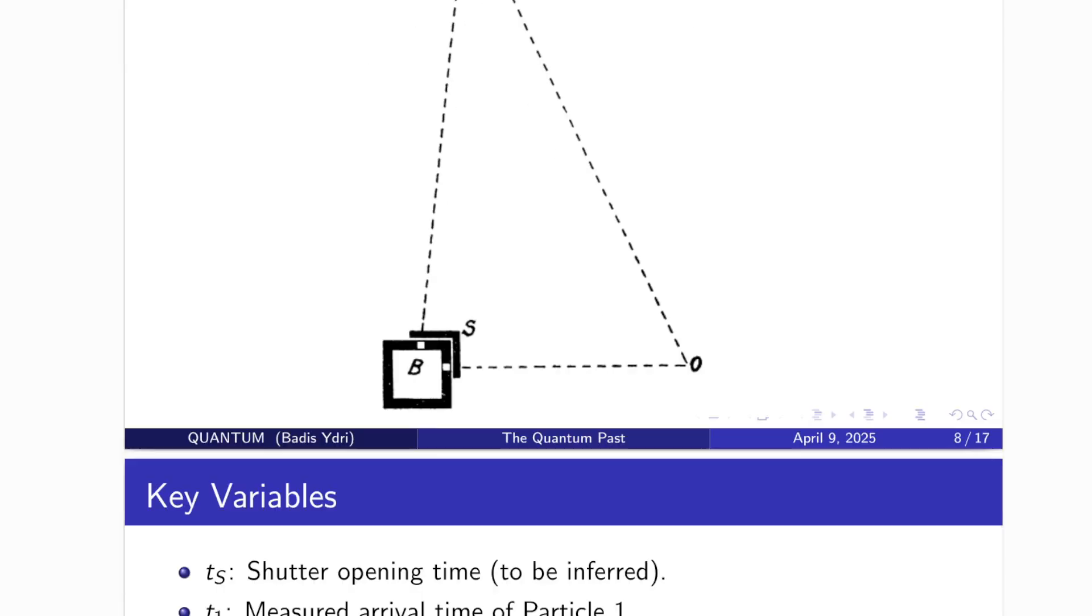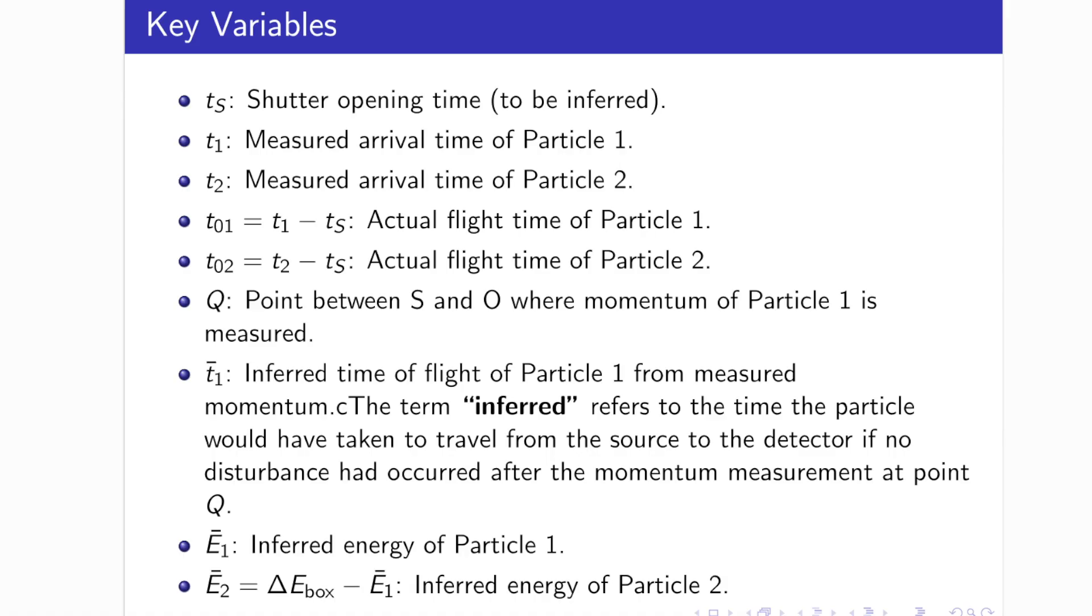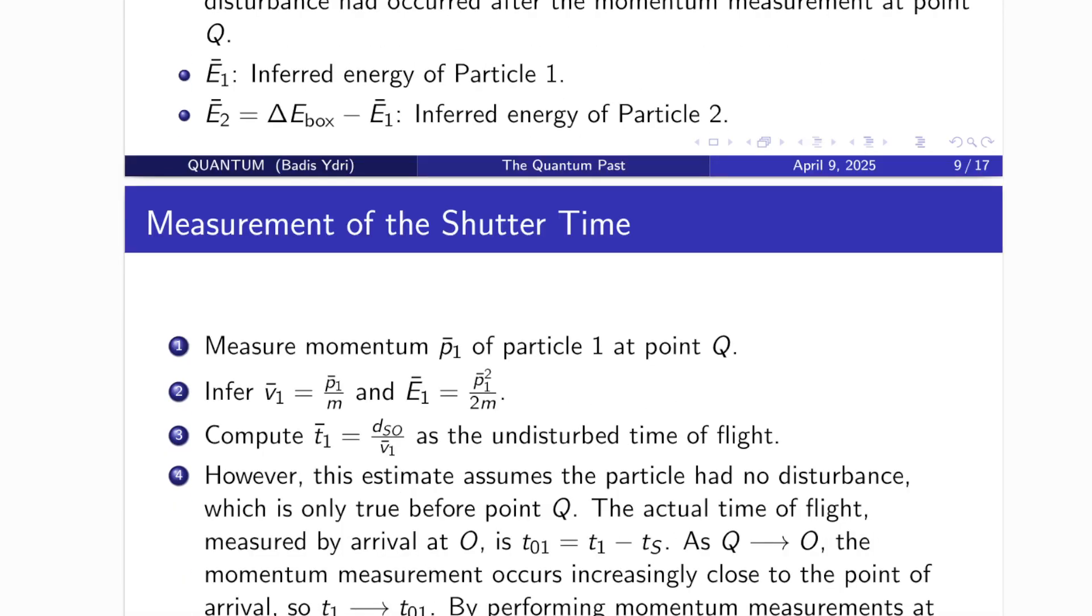Part 2, Key Variables. Here are the key variables used in the experiment. T sub S is the time the shutter opens. It's unknown and must be inferred. T1 is the measured arrival time of the first particle. T2 is the measured arrival time of the second particle. The actual time of flight for the first particle is T1 minus T sub S. The actual time of flight for the second particle is T2 minus T sub S. Q is a point located between the source and the observer where we attempt to measure the momentum of the first particle. T bar 1 is the inferred flight time of the first particle. It is calculated from the momentum measurement as if the particle had not been disturbed. E bar 1 is the inferred energy of the first particle. And finally, E bar 2 is the inferred energy of the second particle. It is simply the total energy loss from the box minus the energy of the first particle.